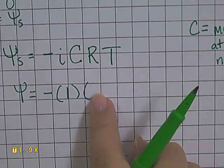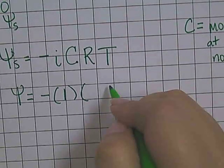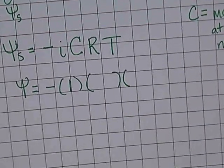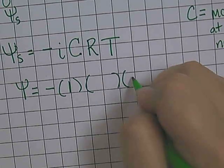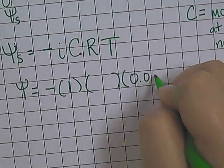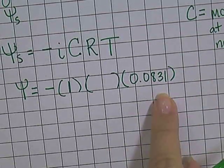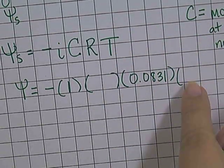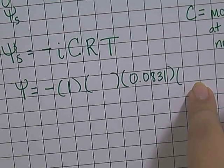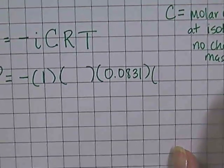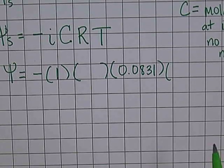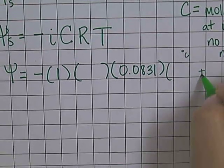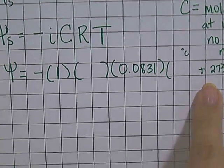R represents a pressure constant: 0.0831 liter bars divided by moles in Kelvin. Then you need your temperature in Kelvin. You'll need to get the temperature reading for your class period. The temperature will be given in Celsius, so you must add 273 to convert it to Kelvin.